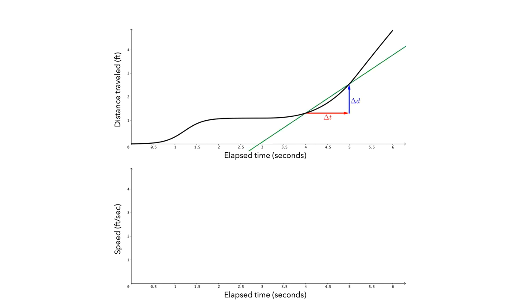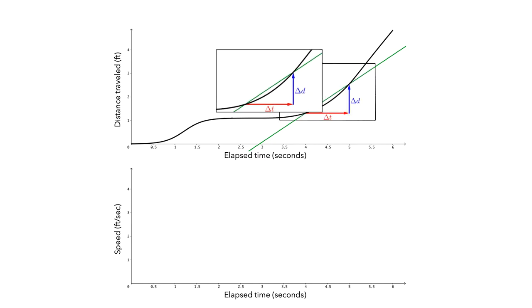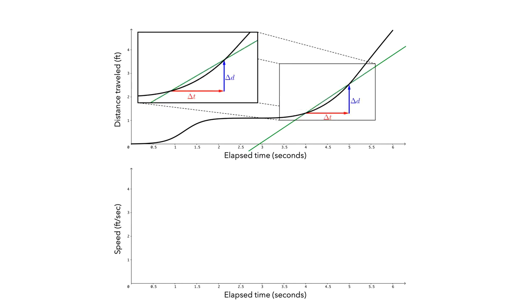Graphically, the slope of the secant line will give us an average rate of change that is a reasonable approximation of the instantaneous speed right at 4 seconds. To see this, let's zoom in on a region containing our amounts of change. Initially, the amount of change in time of 1 second has a corresponding amount of change in distance of 1.23 feet. This gives us an average speed of 1.23 feet per second, but we could get a better approximation by using a smaller amount of change in time.